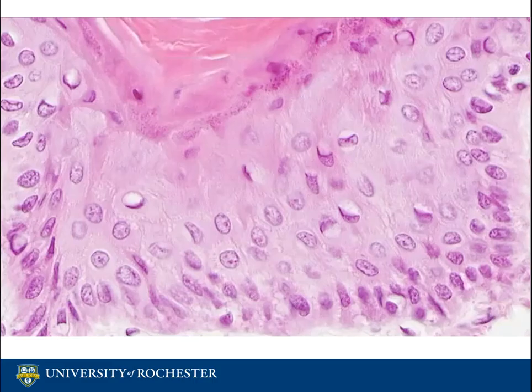This image shows a high-powered view of the cells composing the bottom layers of the epidermis. You can see the nuclei of the lower cells and the transition of where the nuclei disappear as you move towards the upper layers, depicting the transition towards keratinization that these cells take part in.